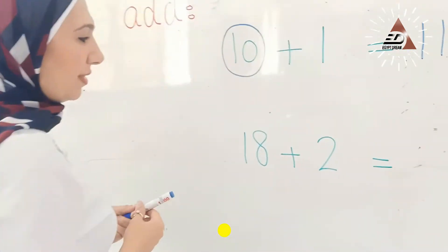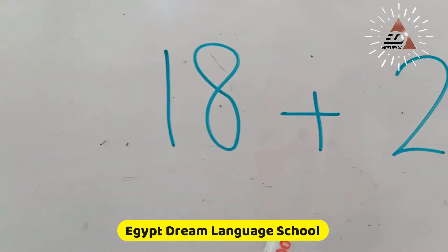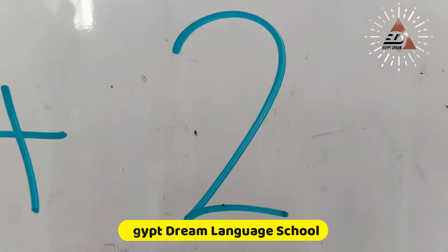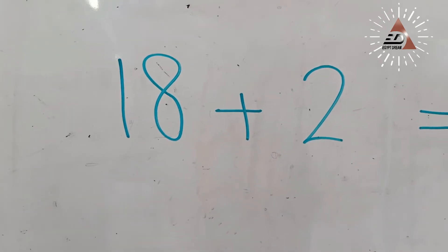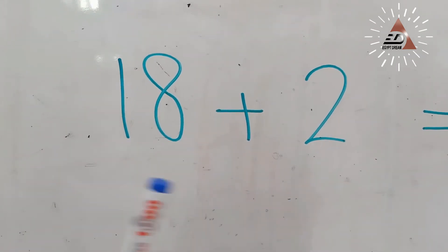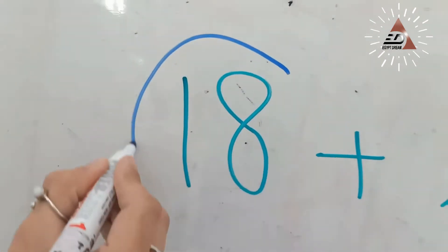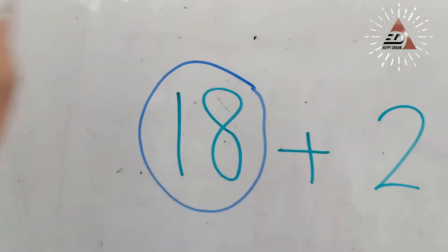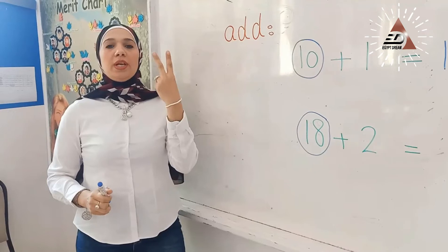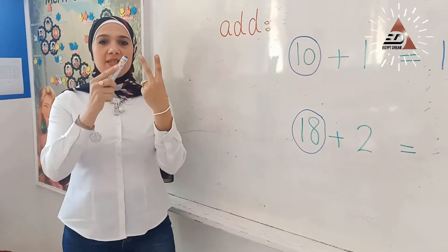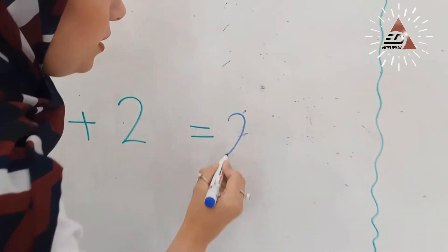Another one. What is this number? 18 plus 2. Which one is the bigger number? 18 or 2? Yes, 18. It's the bigger. Put 2 on your hand. Count after 18: 19, 20. Write number 20.